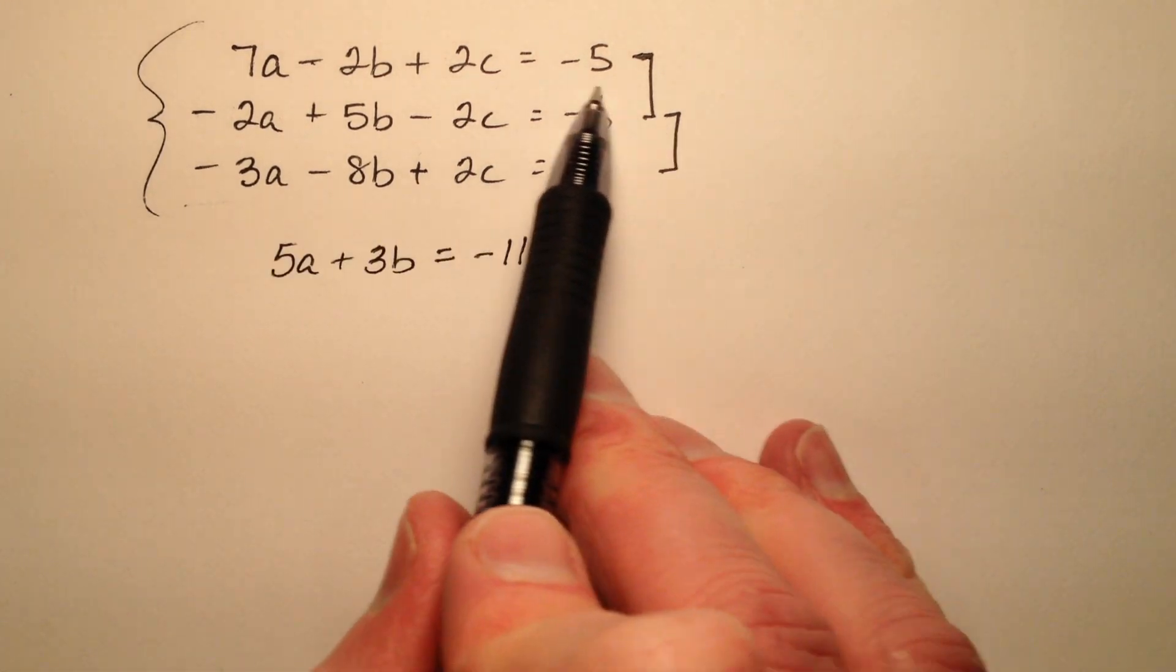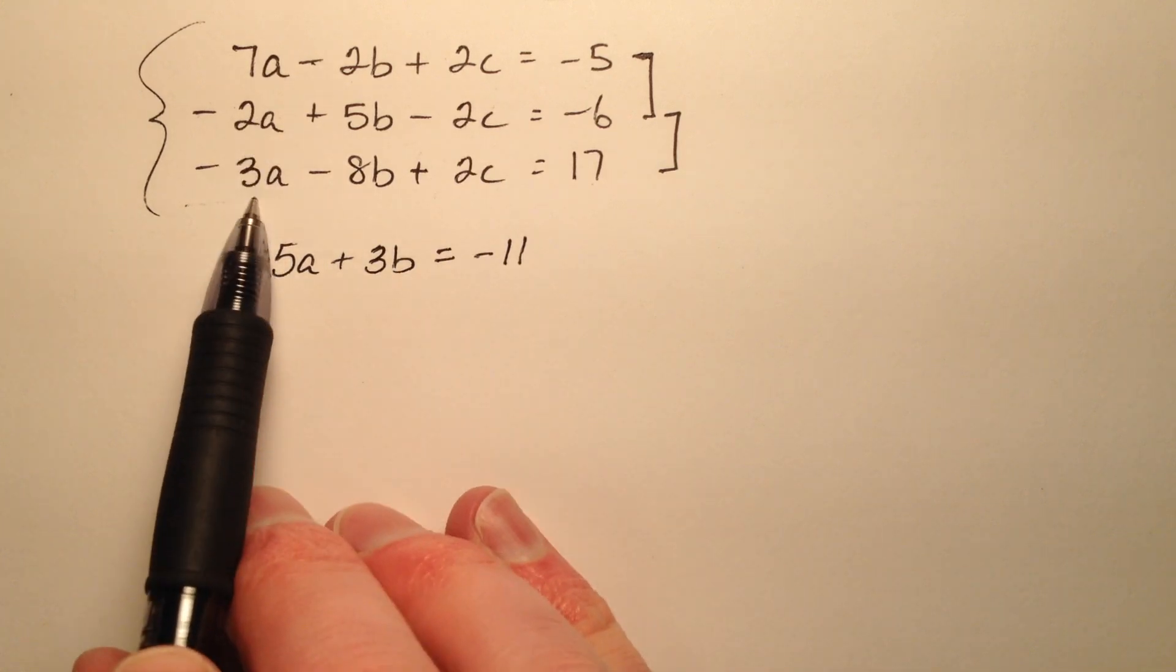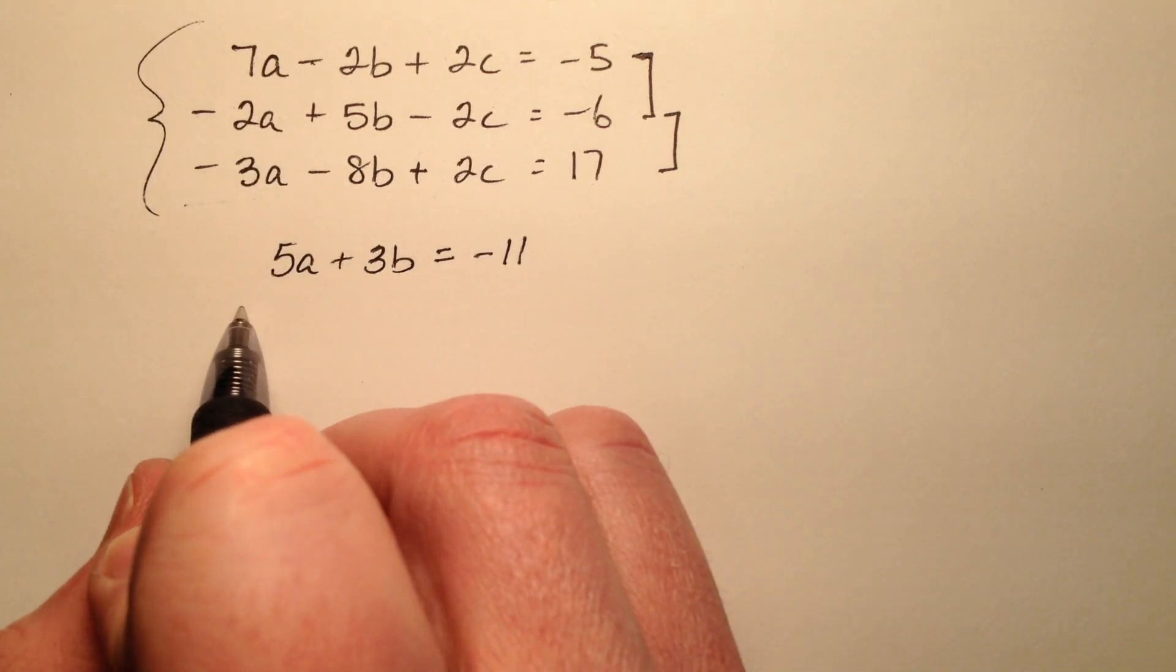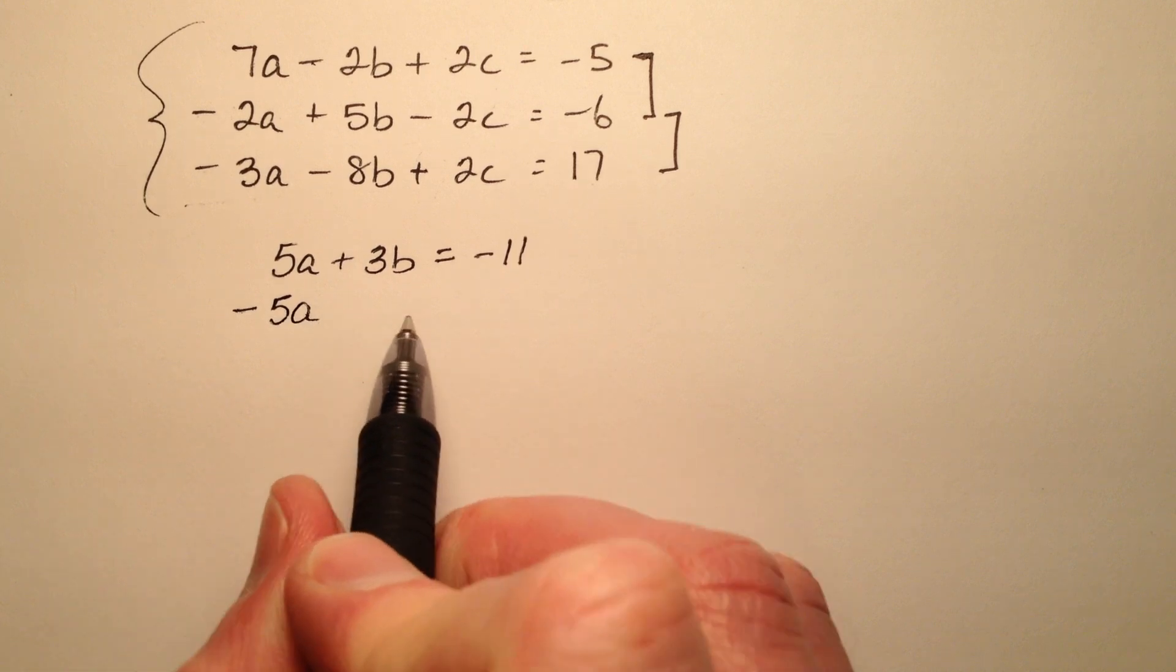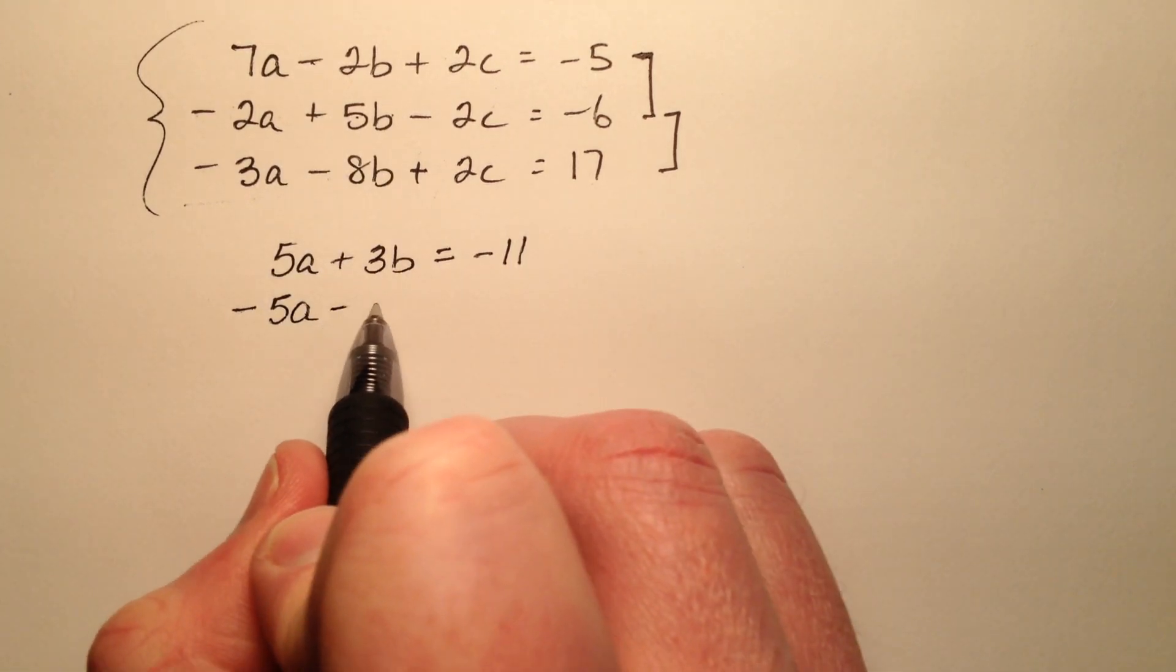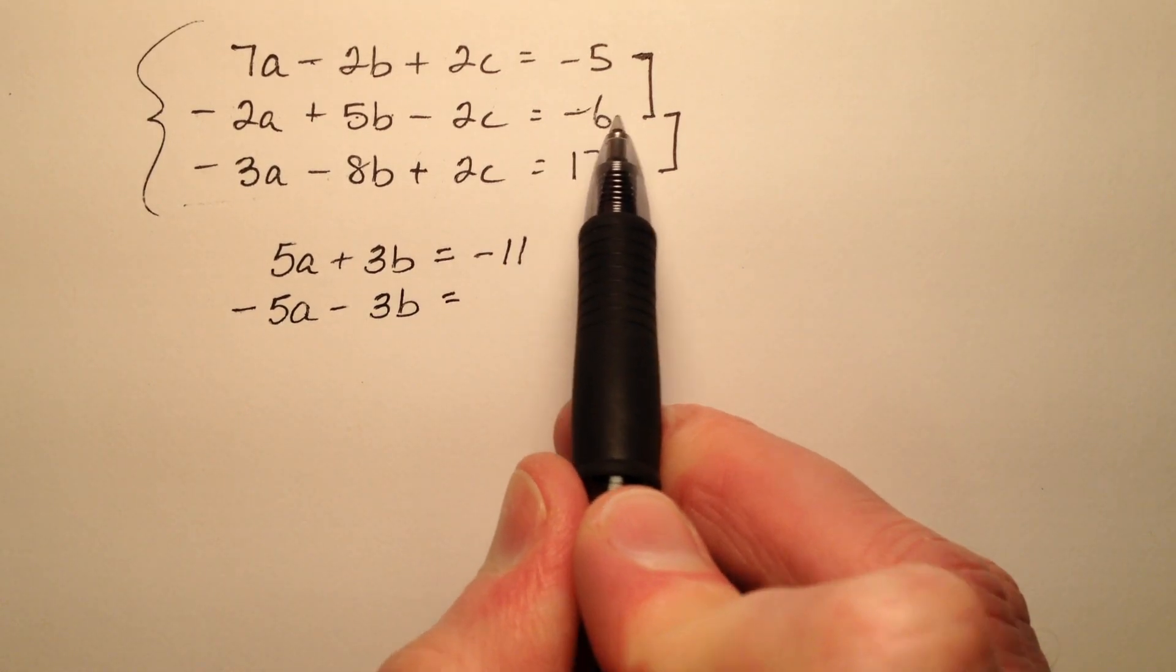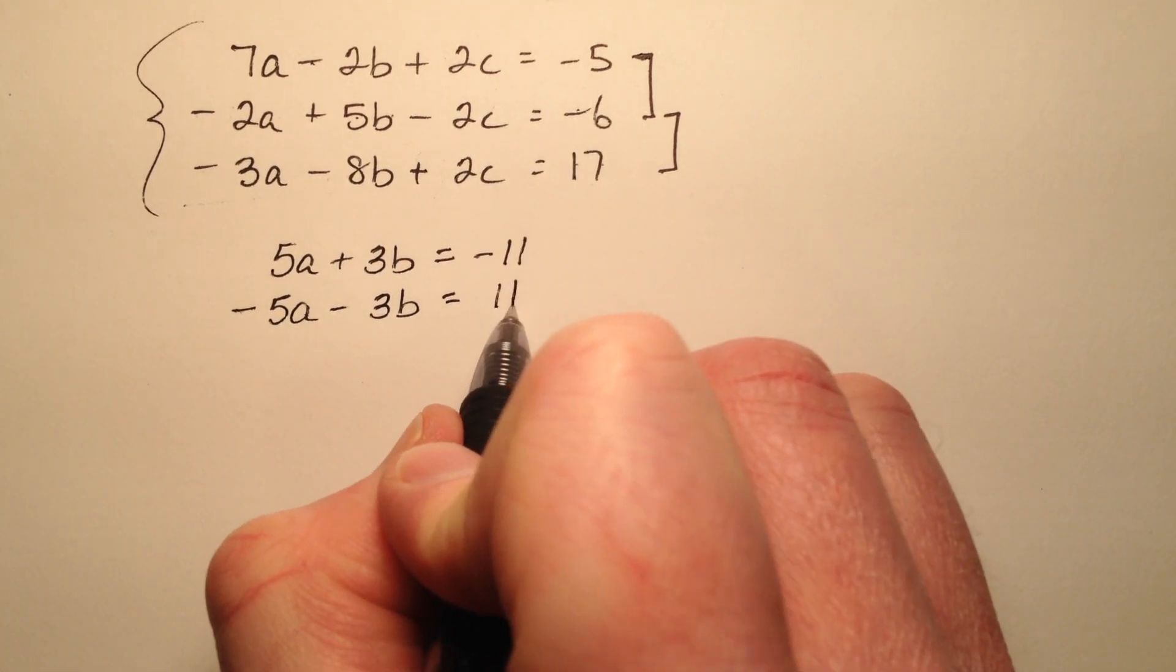Let's go ahead and do the same thing for the second two equations. I see that my c's will cancel out. So negative 2a and negative 3a make negative 5a, and 5b minus 8b makes a negative 3b, and negative 6 plus 17 is a positive 11.